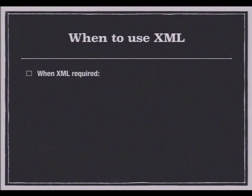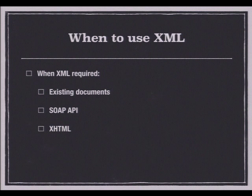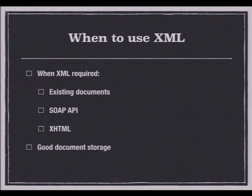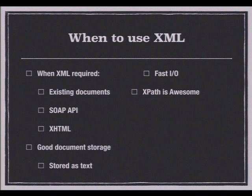So when do you use XML? You should use it when you have existing XML documents to deal with — for example, if you have a SOAP API or XHTML you want to load into your database. It has very good document storage, it's pretty efficient because it's just storing text which compresses nicely, and therefore has very fast I/O. XPath is really awesome — a little arcane, but I think it's cool.